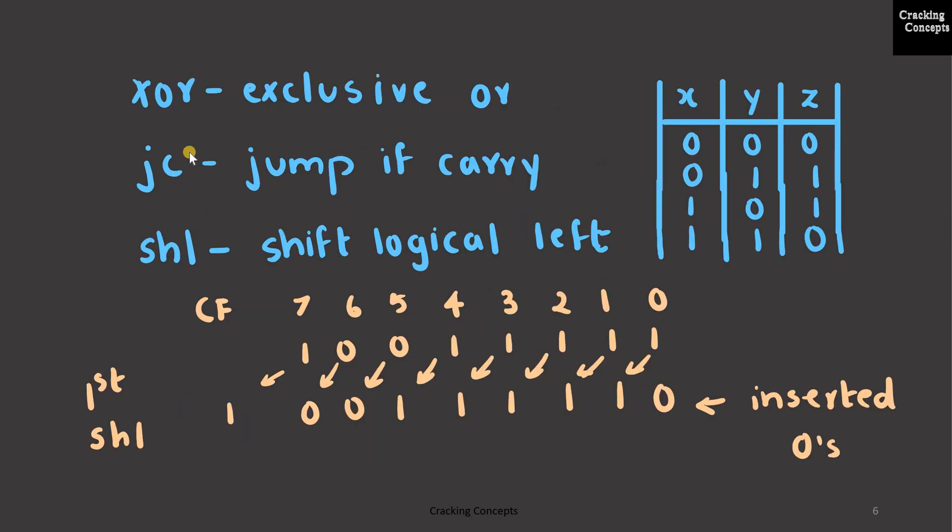Then we use the XOR instruction, which does the exclusive OR. This is the truth table for XOR. For the case where X and Y are the same, the output is 0. For all other cases it will be 1.